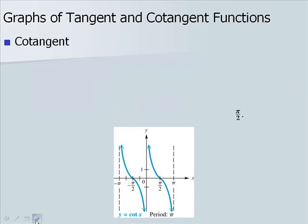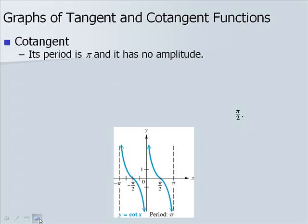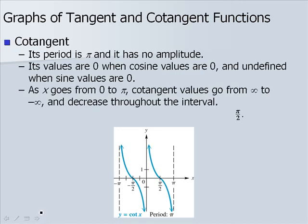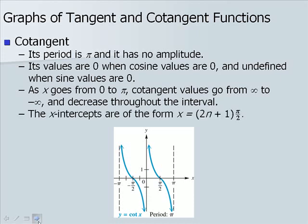Cotangent is the reciprocal of tangent, so the graph goes in the opposite direction. Its period is also π with no amplitude. Its values are 0 when cosine values are 0, and undefined when sine values are 0 — the opposite of tangent. As x goes from 0 to π, cotangent values go from positive infinity to negative infinity, decreasing throughout the entire interval. The x-intercepts are of the form x equals (2n+1)π/2.